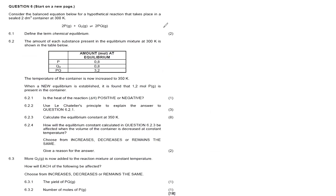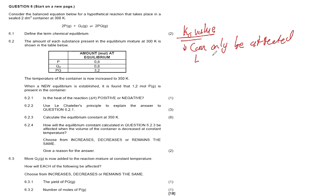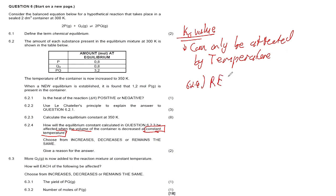The Kc value can only be affected by temperature. So even though temperature, concentration, and pressure can all shift the equilibrium position, only temperature actually changes the Kc value. They're saying the volume is decreased at constant temperature — they're not changing temperature, only volume. Volume does not affect Kc, so the answer is: remains the same.